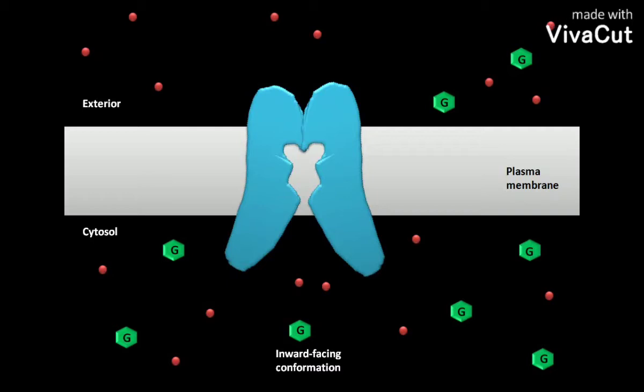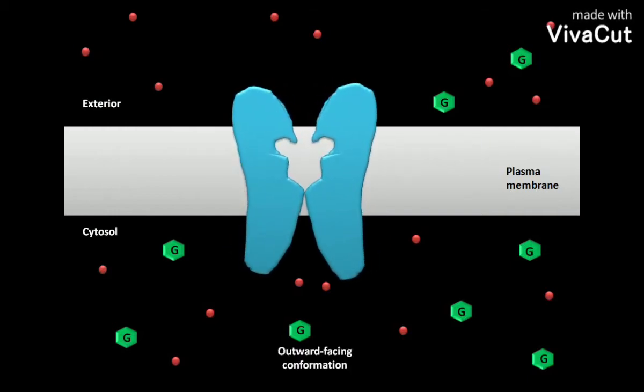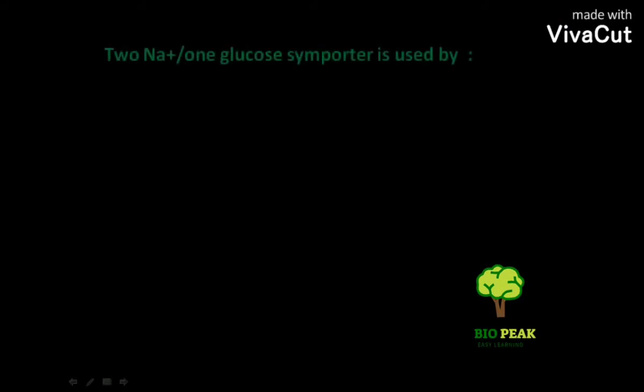This dissociation allows the symporter protein to attain its outward facing conformation again, and the symporter becomes ready to transport additional substrate. The two Na plus one glucose symporter is used by cells lining the kidney tubules and small intestine.